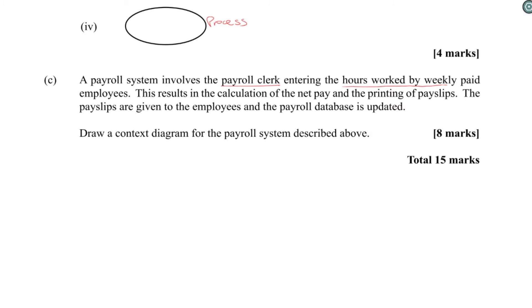The payroll clerk, as the external entity, is entering hours worked by employees—that sounds like data. This results in the calculation of net pay and pay slips. The pay slips are given to employees and the payroll database is updated. In normal circumstances, you're not supposed to have a data store in a context diagram by the definition of data flow diagrams, but for some reason CXC has that data store in this question so we've just put it in.